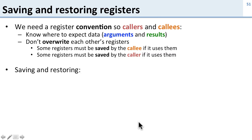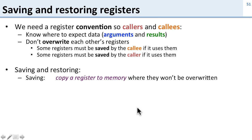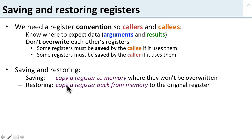So how do we actually save and restore things? To save a register, we copy it to memory. Once it's in memory, it won't be overwritten if the callee uses that register. When restoring, we copy the value back from memory to the original register. So we're using this memory location called the stack in order to keep all of these values safe.